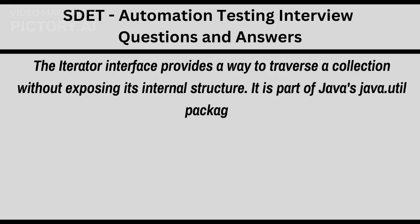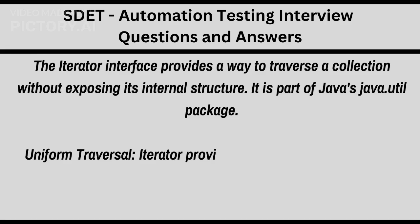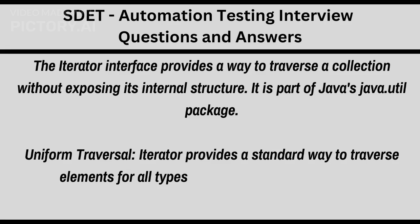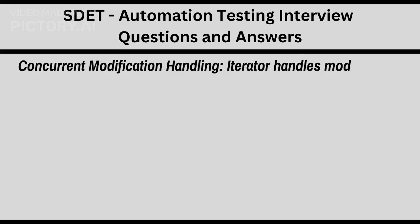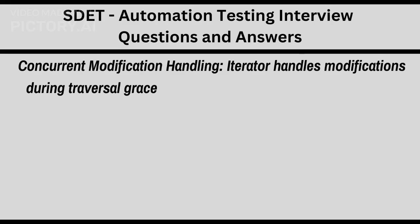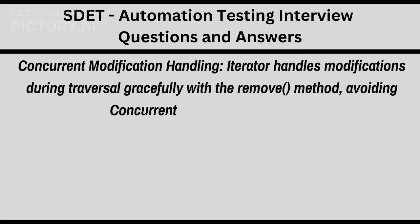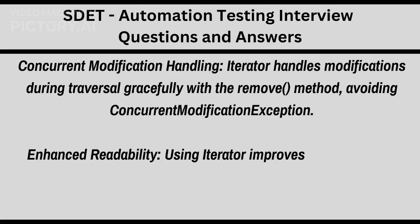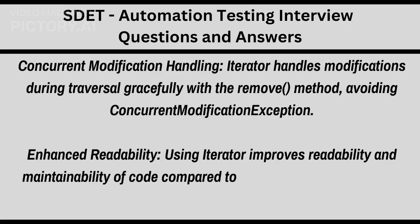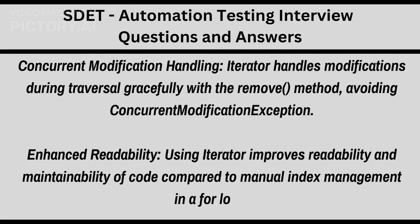It is part of Java's java.util package. Uniform traversal: Iterator provides a standard way to traverse elements for all types of collections, for example List and Set. Concurrent modification handling: Iterator handles modifications during traversal gracefully with the remove method, avoiding ConcurrentModificationException. Enhanced readability: using Iterator improves readability and maintainability of code compared to manual index management in a for loop.